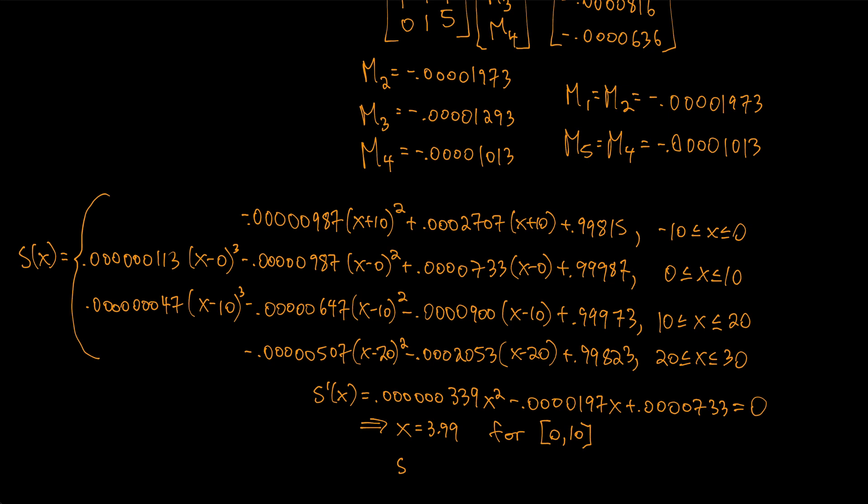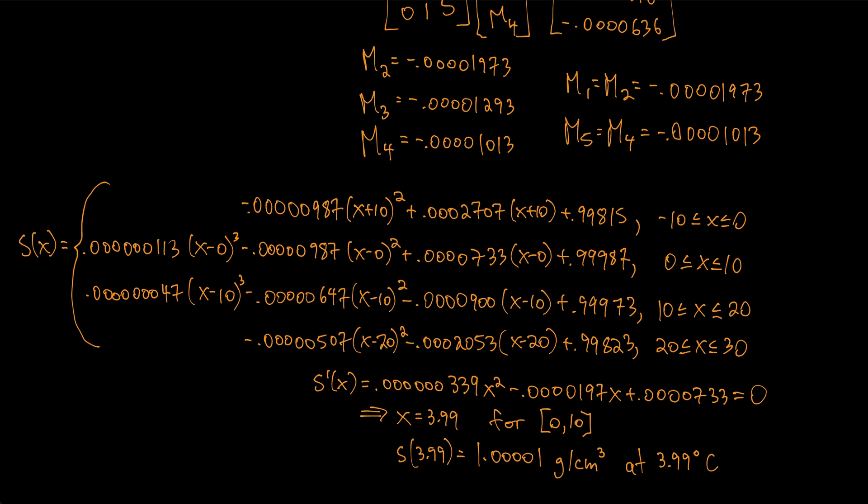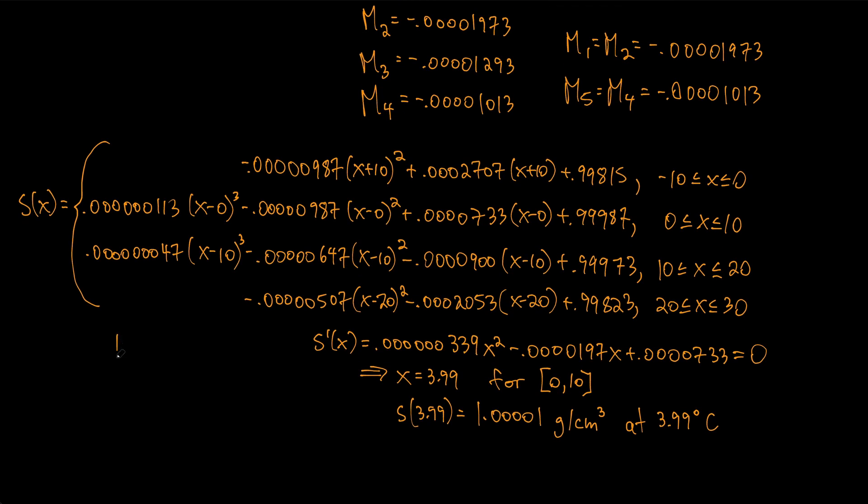So that means that S(3.99) would be equal to 1.0000001 grams per cubic centimeter as a maximum value at 3.99 degrees Celsius, which kind of makes sense because it's very very close to 1.000000 grams which was our standard of measurement.